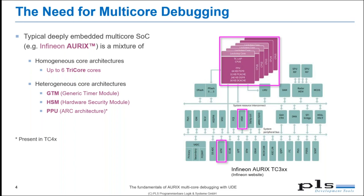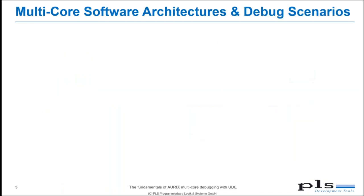You see that the architecture is very heterogeneous. This mix of homogeneous and heterogeneous cores has a significant impact on the software architecture and, of course, also for debugging. To illustrate this, let me show you the typical three scenarios for software partitioning.